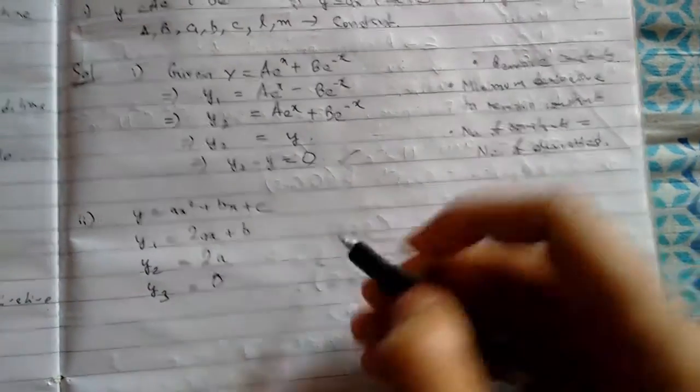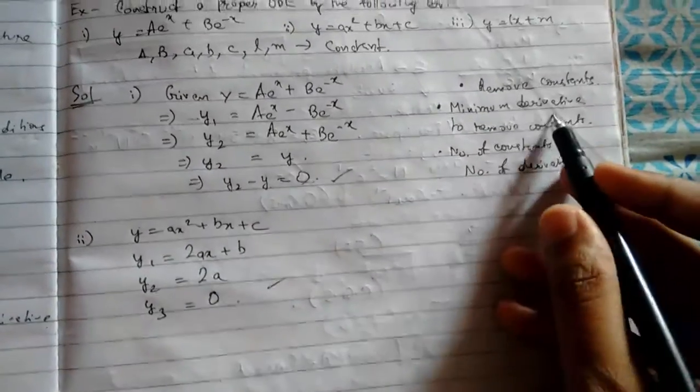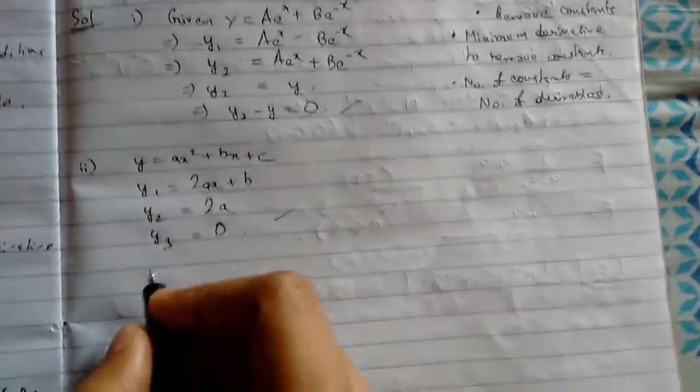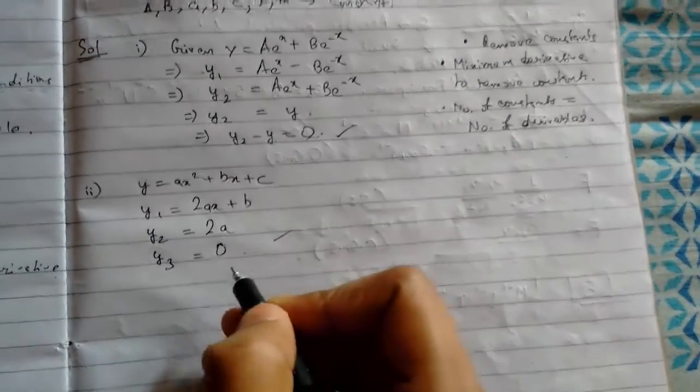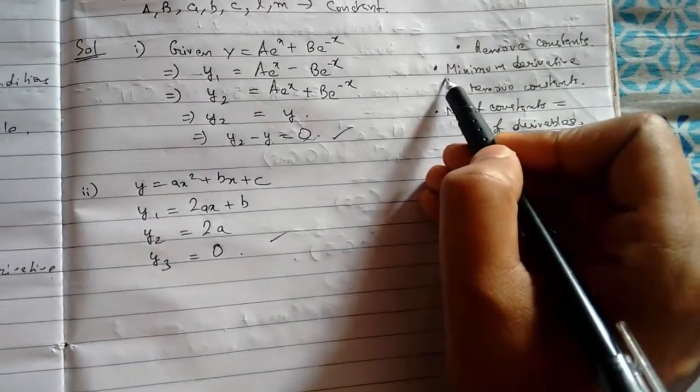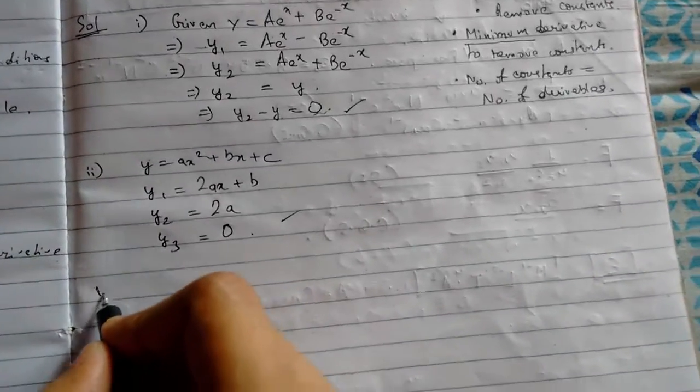Number of constants equal to number of derivatives: three constants, three derivatives. So this is our equation, and we have used the minimum derivatives. If we do y₄ it will also be 0, but we must use the minimum.